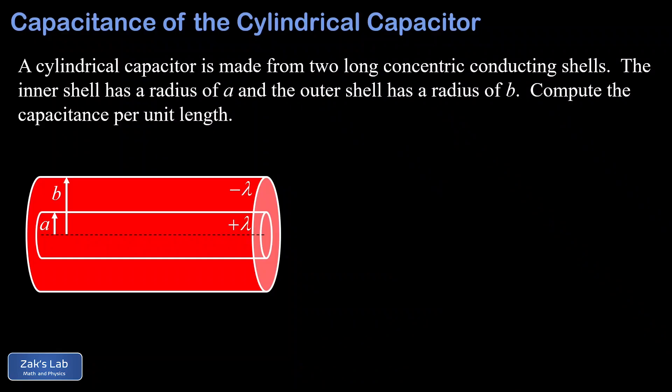In this video we want to compute the capacitance of the coaxial capacitor, also called the cylindrical shell capacitor. The usual procedure here is to put opposite charges on the two conductors, then we calculate the potential difference between the conductors — in other words, the voltage — and then we use the definition of capacitance.